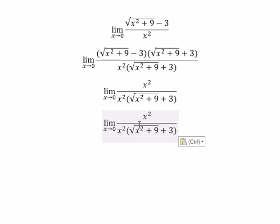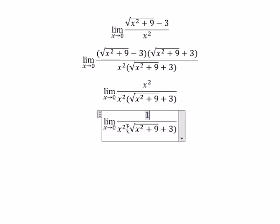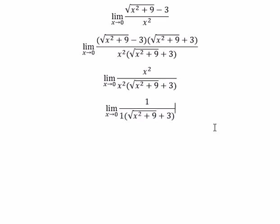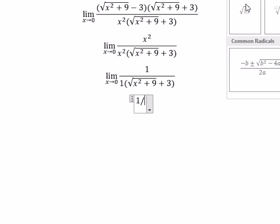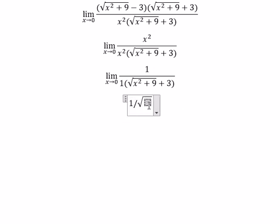Now we put x equal to 0 in here, and you will get 1 over the square root of 0 plus 9, and we have number 3. This gives you number 3.